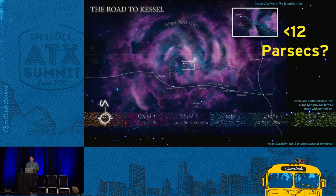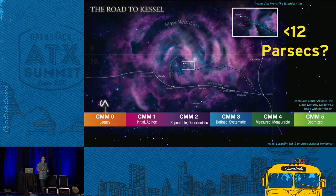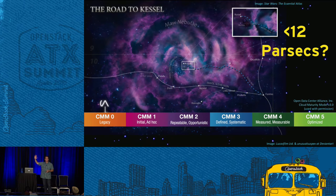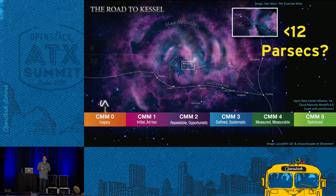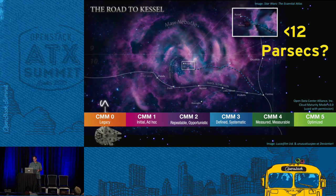I want to equate this journey to the Kessel Run — what it really took Han Solo, how many times he had to go through it before he really got good. That's the same thing it should take for you as cloud implementers. One way to draw this corollary is with the Cloud Maturity Model, a framework published by the Open Data Center Alliance. Basically it's a five-level maturity process through which you really have to go, regardless of whether you're doing public or private cloud.